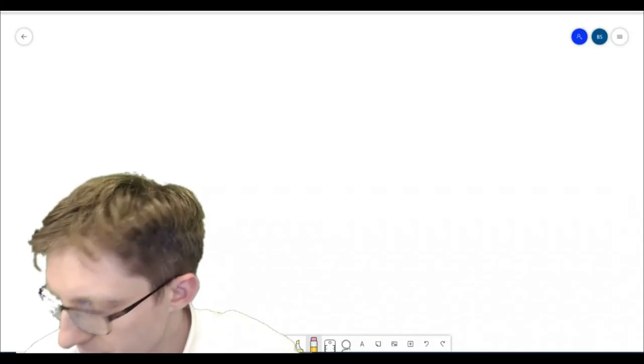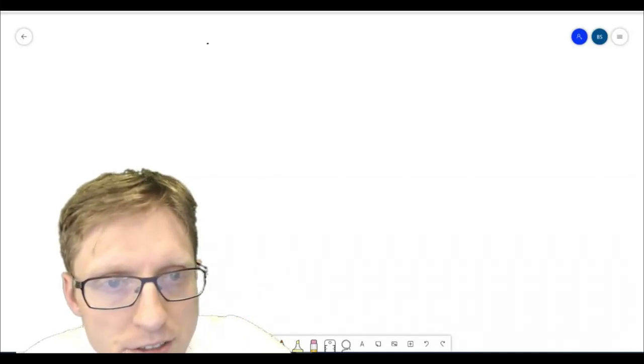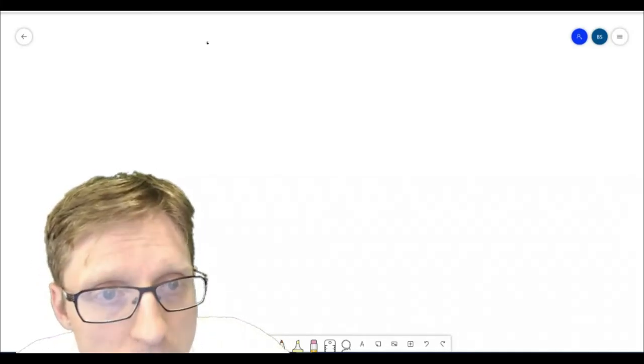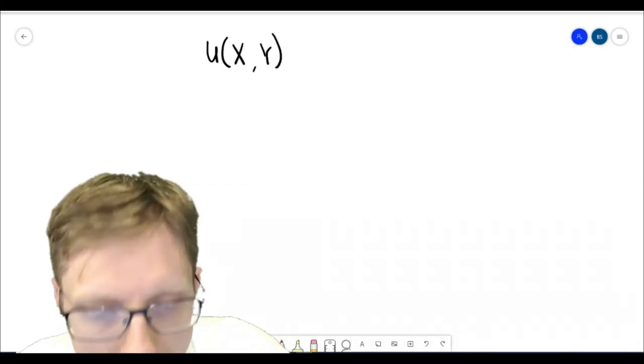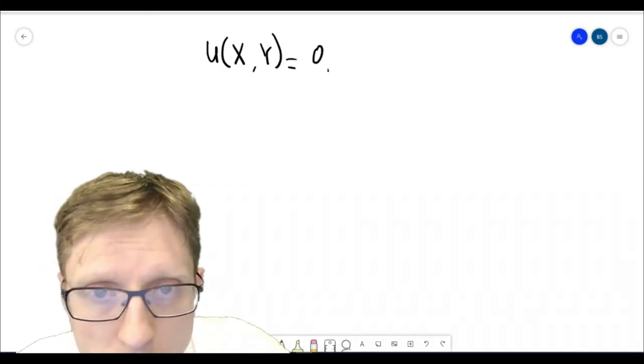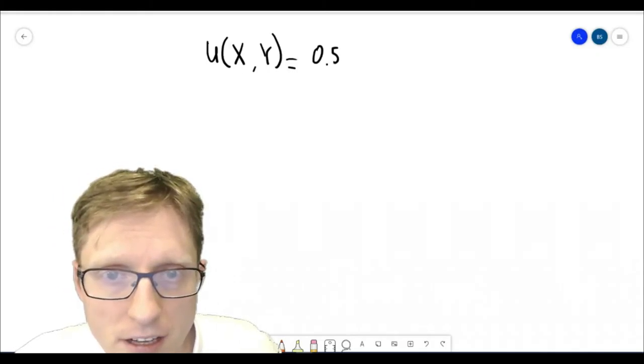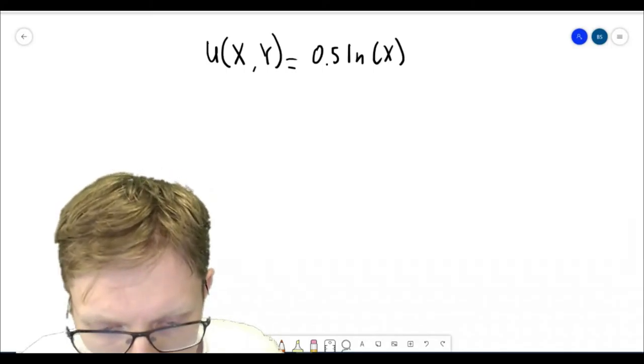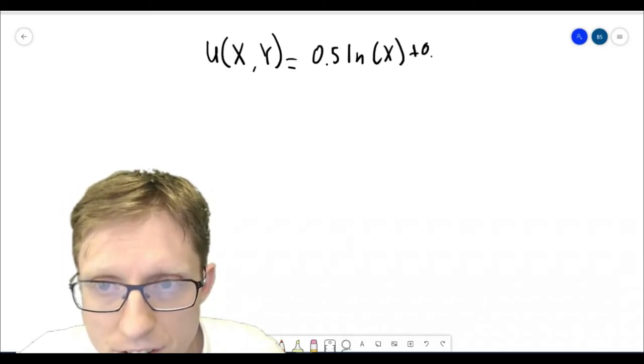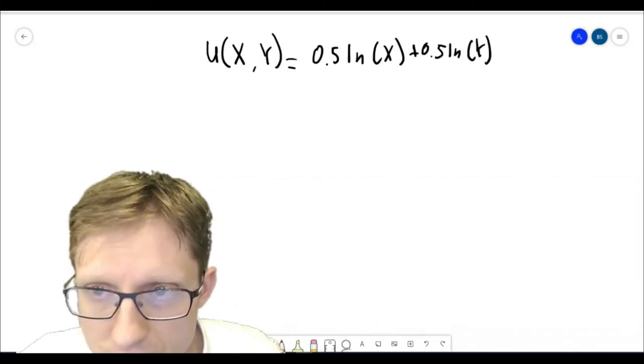So let's look at how we do that. Let me give a particular example here. We're going to assume that the utility function for the amount of good x and the amount of good y consumed is equal to 0.5 times the natural log of the quantity of good x consumed plus 0.5 times the natural log of the amount of good y consumed.